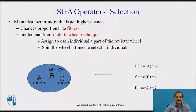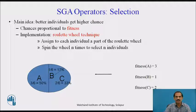For selection, we use the roulette wheel. The main idea is that better individuals get higher chances, and the chance is related to fitness. Using this roulette wheel technique, probabilities are expressed on the wheel, and a selection is done to assign each individual a portion of the roulette wheel. We spin the wheel n times to select n individuals for the population. For example, the fitness values might be: A = 3, B = 1, and C = 2, representing the fitness associated with each chromosome.